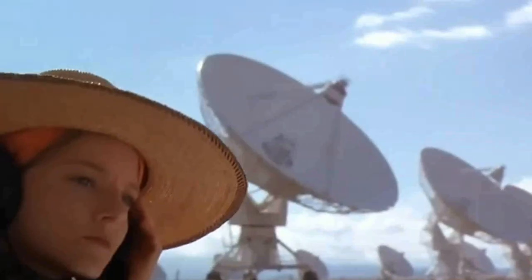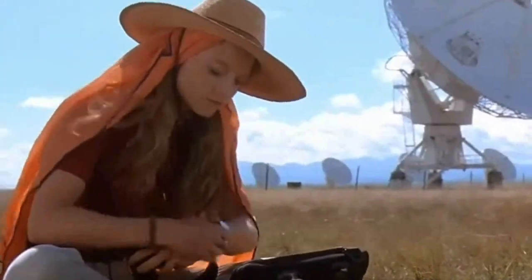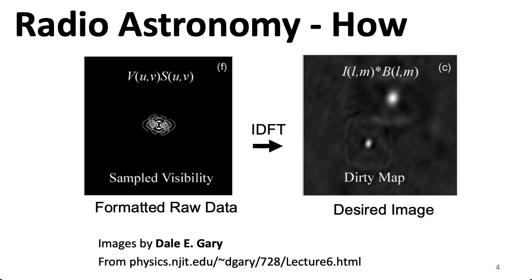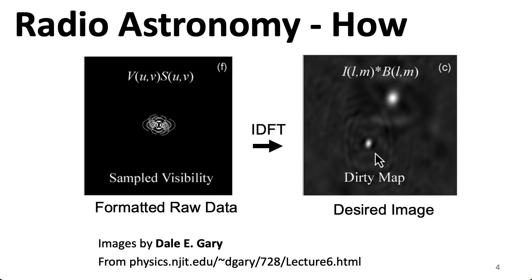Have you seen the movie Contact? Do you remember that scene where the character played by Jodie Foster first discovers signals from an extraterrestrial civilization? That scene was filmed at the Very Large Array in New Mexico. The colors you see in a radio astronomy image don't correspond to actual visual colors — they're a representation of different parts of the electromagnetic spectrum. By pre-processing the data from the telescopes in a certain way, you get sample points on the two-dimensional Fourier transform of the underlying image that you want. You can take that, compute the inverse discrete Fourier transform, and get an image. Because you're missing a lot of the Fourier transform, you get a messy image referred to as a dirty map. Radio astronomers have a way of dealing with that and trying to reconstruct what they call the clean map.